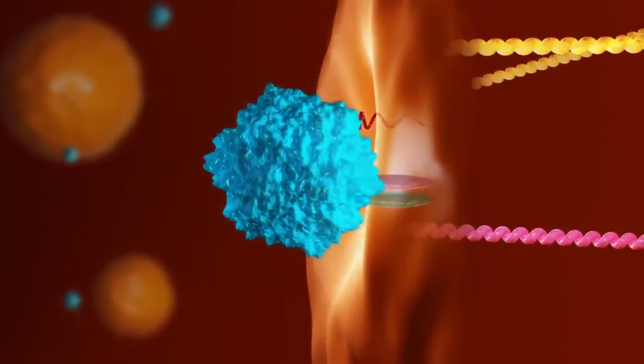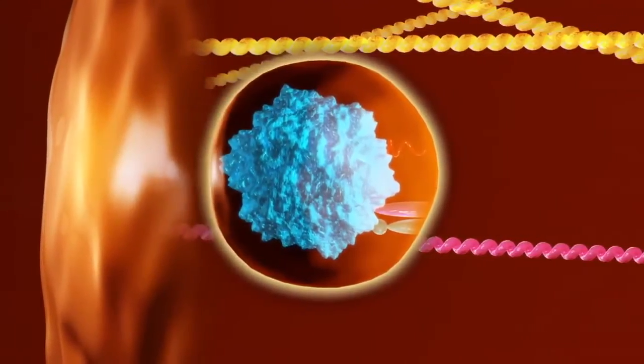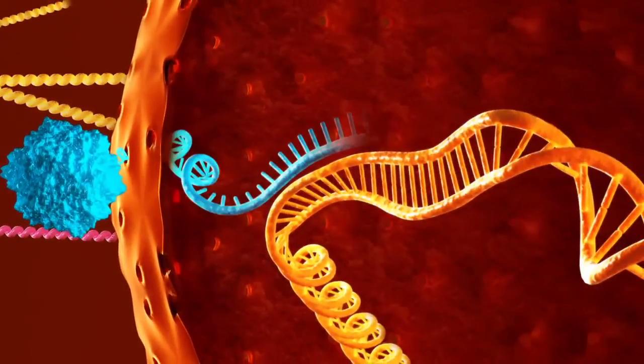Upon binding to receptors on the cell surface, the viral capsid is drawn into the cell and uses the machinery of the cell to deliver a stretch of single-stranded DNA into the nucleus.